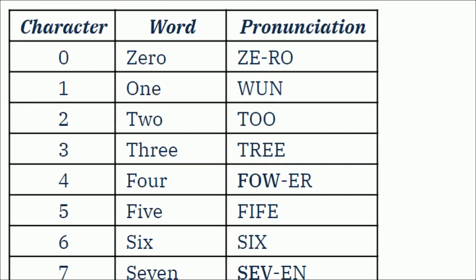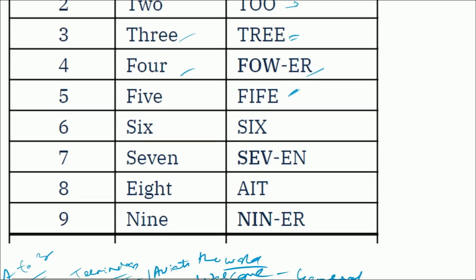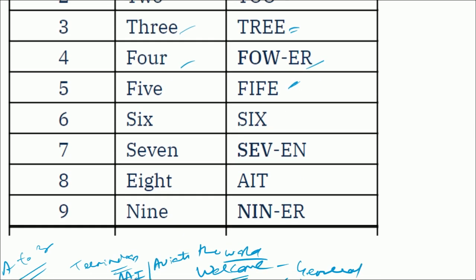In aviation, 0 is pronounced as 'zero,' 1 is 'one,' 2 is 'two,' 3 is 'tree,' 4 is 'fower,' 5 is 'fife,' 6 is 'six,' 7 is 'seven,' 8 is 'ait,' and 9 is 'niner.'